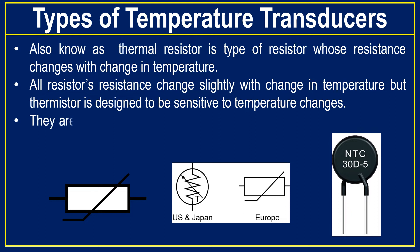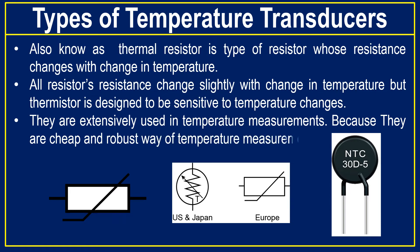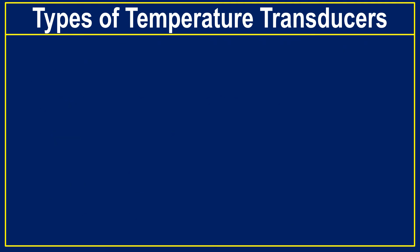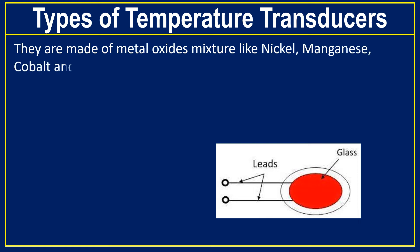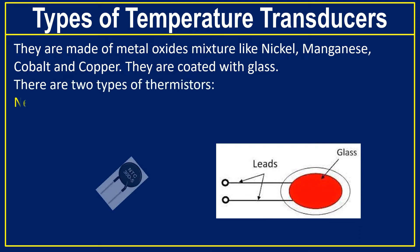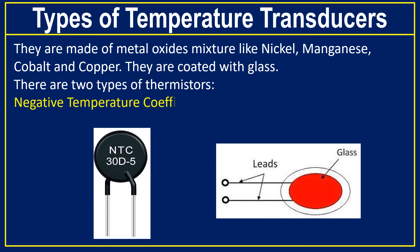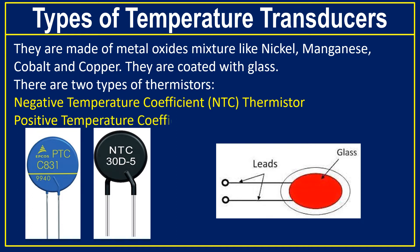Thermistors are extensively used in temperature measurement because they are a cheap and robust way of measuring temperature. They are made of metal oxide mixtures like nickel, manganese, cobalt, and copper, and are coated with glass. There are two types of thermistors: negative temperature coefficient or NTC thermistor, and positive temperature coefficient or PTC thermistor.